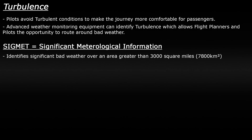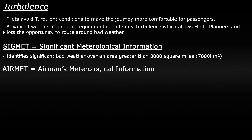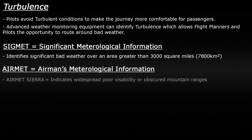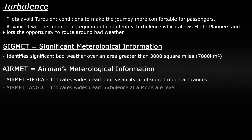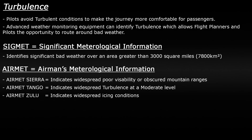They can also use a second weather report called an AIRMET, which stands for Airmen's Meteorological Information. This is very similar to a SIGMET, however the weather is not as severe but still poses a risk to aircraft. There are three types of AIRMET reports: AIRMET Sierra, which indicates widespread IFR conditions or mountains obscured by low visibility; AIRMET Tango, which indicates moderate turbulence over a wide area; and AIRMET Zulu, which indicates icing conditions over a large area. Like SIGMETs, AIRMETs cover an area at least 3,000 miles squared and are valid for 6 hours.